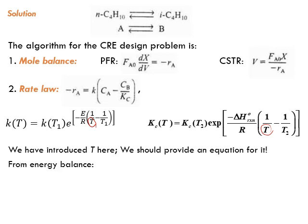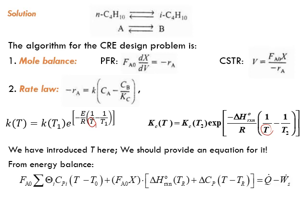Let's write the energy balance. So summation of FA0 theta I CpI times (T minus T0) plus FA0 times X times delta H reaction equals Q dot minus shaft work. Can we simplify? Yes. We can neglect the shaft work, it's adiabatic so Q dot is zero. We know that delta Cp is zero as well.